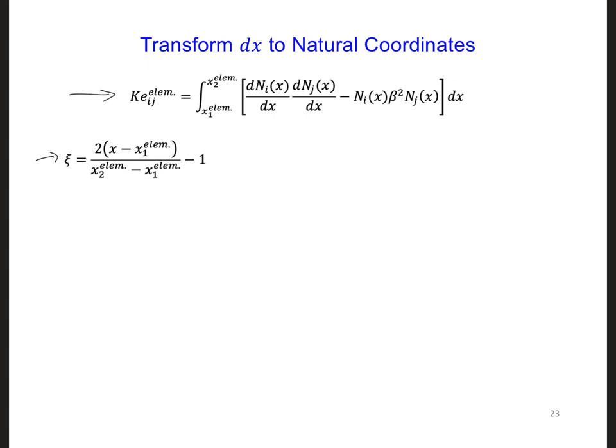To convert these ke terms to natural coordinates, we can start by developing an expression for the derivative of psi, dpsi, with respect to x, dx. For this, we get 2 over x2 element minus x1 element, and that's just equal to 2 divided by the length of the element.